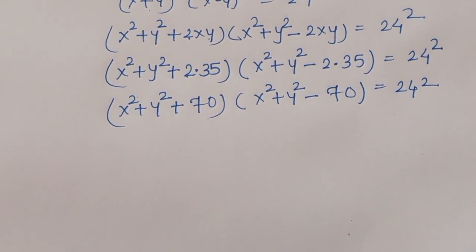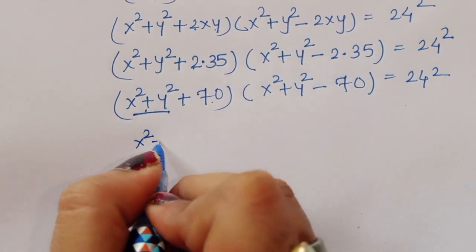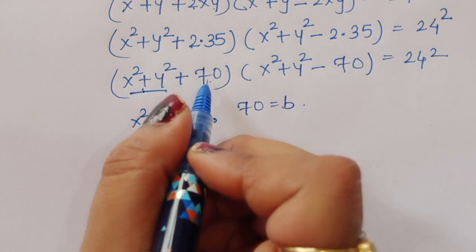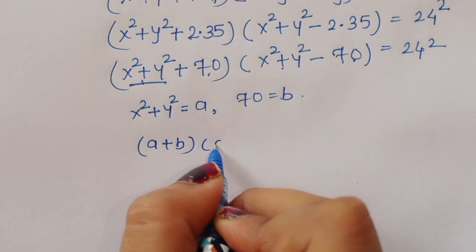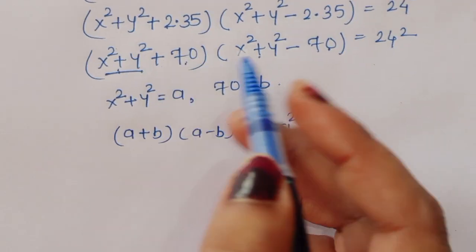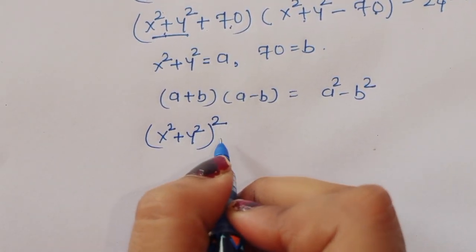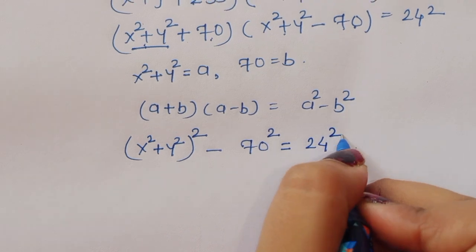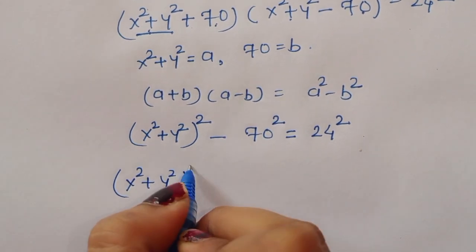Now if we consider x squared plus y squared equal to a, and 70 equal to b, this is in the form of a plus b times a minus b, which equals a squared minus b squared. So using this formula we can write x squared plus y squared, whole squared, minus 70 squared, is equal to 24 squared.